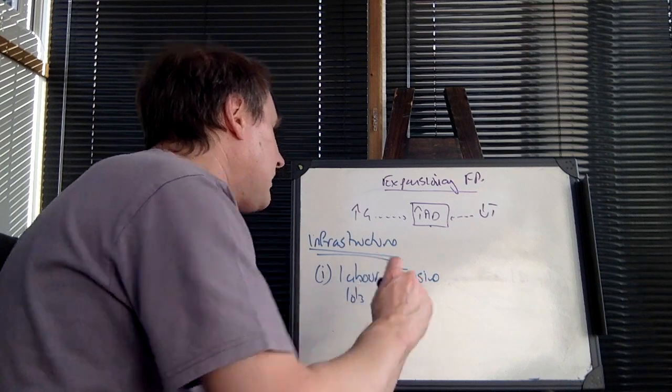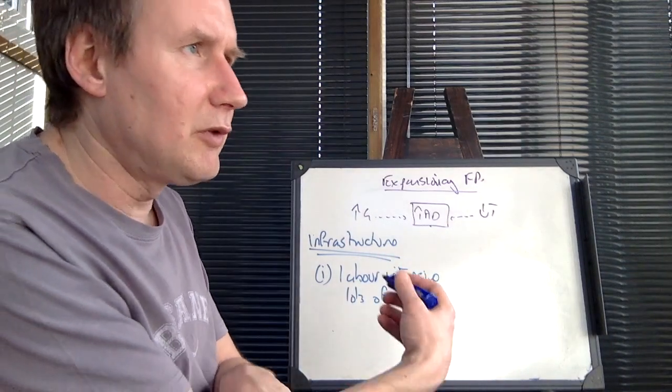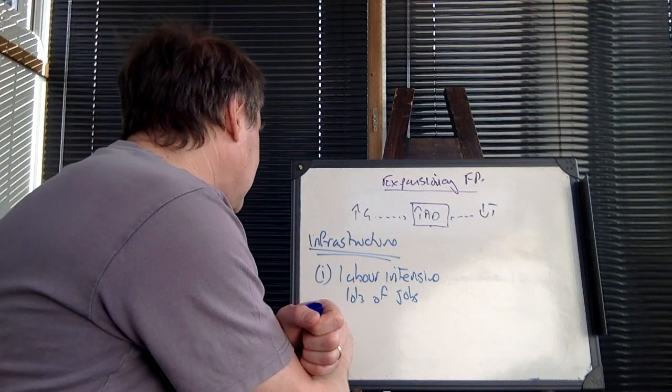By labour intensive, what I mean is that there are lots of jobs in construction. So if you spend a billion dollars, then you get a lot of jobs. Unemployment goes down, they go out and spend their money.